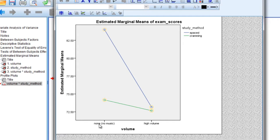And we have labels here on the x-axis. None or no music, and high volume. So notice this factor is volume right here. And then our separate lines, which are given by different colors, those indicate our other factor of study method, where the blue line is spaced, and the green line is cramming.